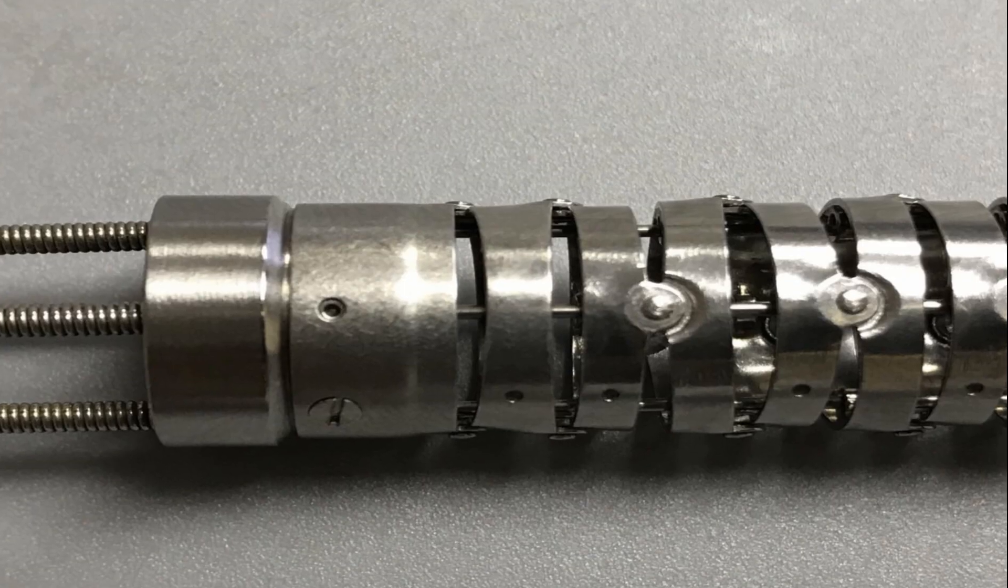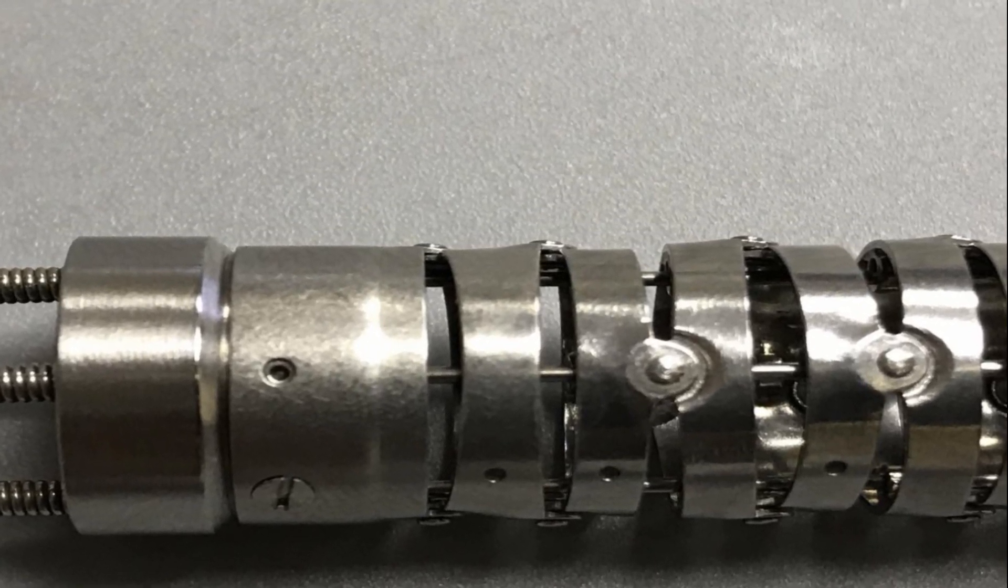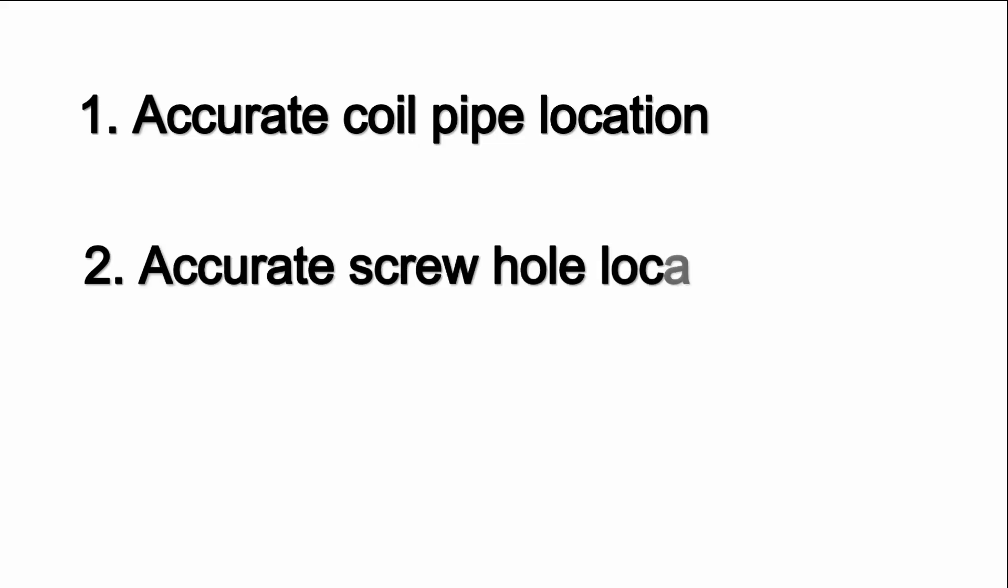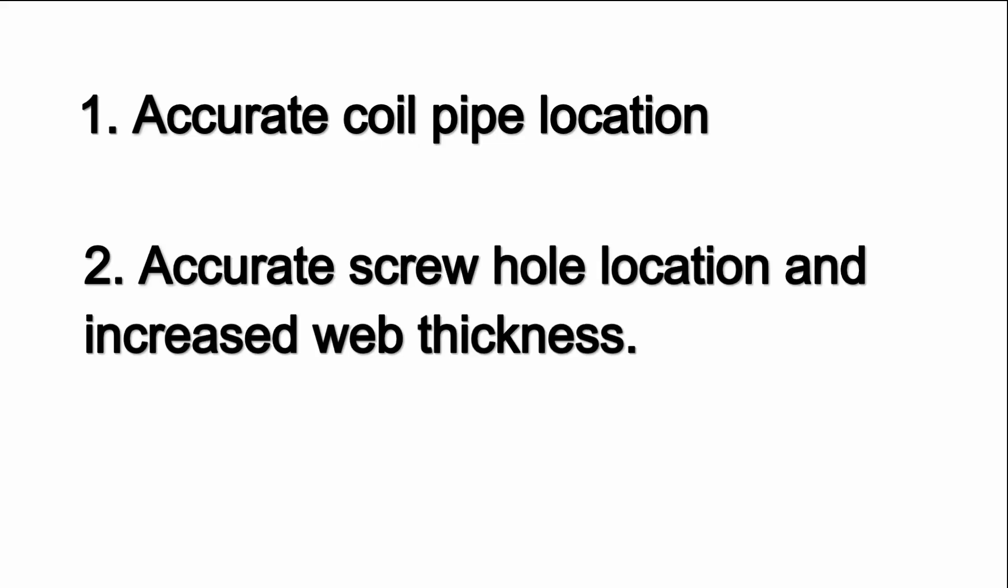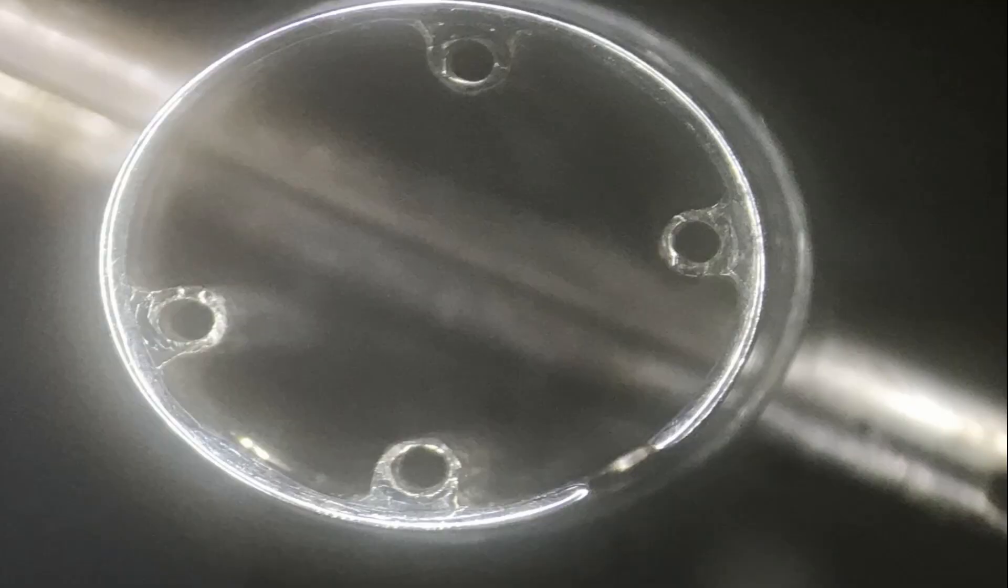If the coil pipes are misaligned, it can cause excessive wear on the cables causing them to fray. The second factor is accurate screw hole location and increased web thickness. If the screw hole is off center, it can bind causing the screw to fail to seat completely or strip the threads.